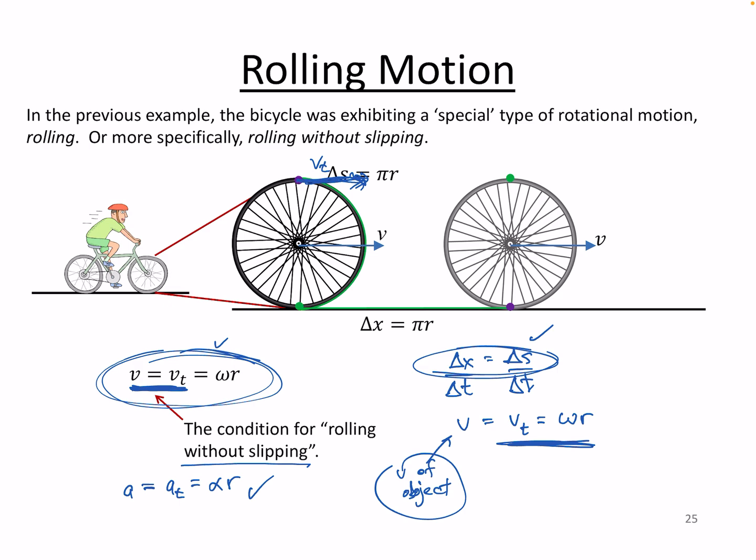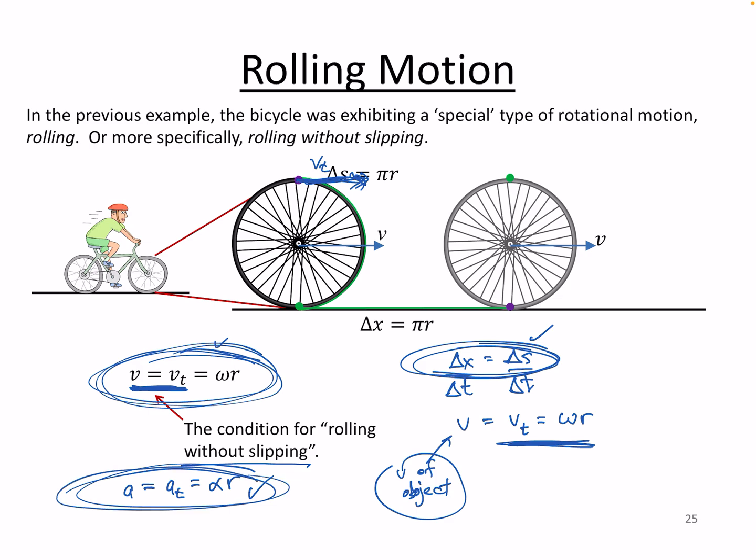But it's important to recognize that rolling without slipping is not always the case. These are the conditions under which you will have rolling without slipping — or if you're told rolling without slipping, you can rely on these conditions to be true.